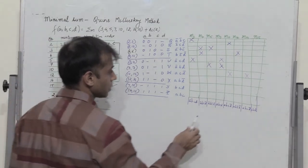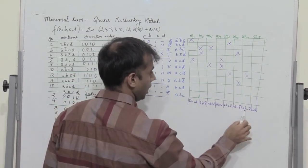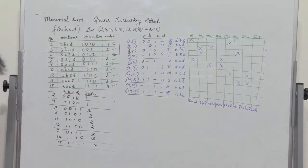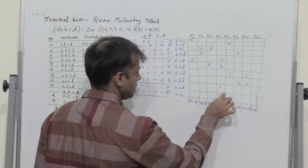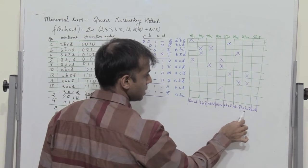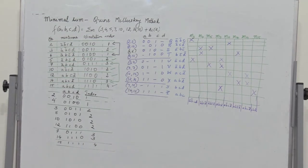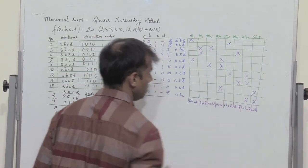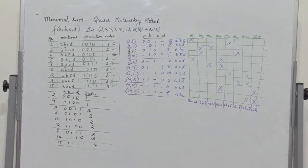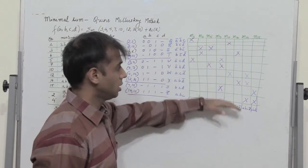Now let us form a table and compare these with the minterms. I have written the variables corresponding to Q, R, S, T up to Z, and the columns contain the minterms only — the don't care is not considered. So M3 is A bar B bar C D, and so on. We compare which variables are common and occurring in these minterms. For example, Q is A bar B bar C — it is present in M3. U covers M3 and M7. R covers M10. S covers M4 and M5. T covers M4 and M12. W covers M10 and M14. X covers M12 and M14. Y covers M7 and M15. Z covers M14 and M15.